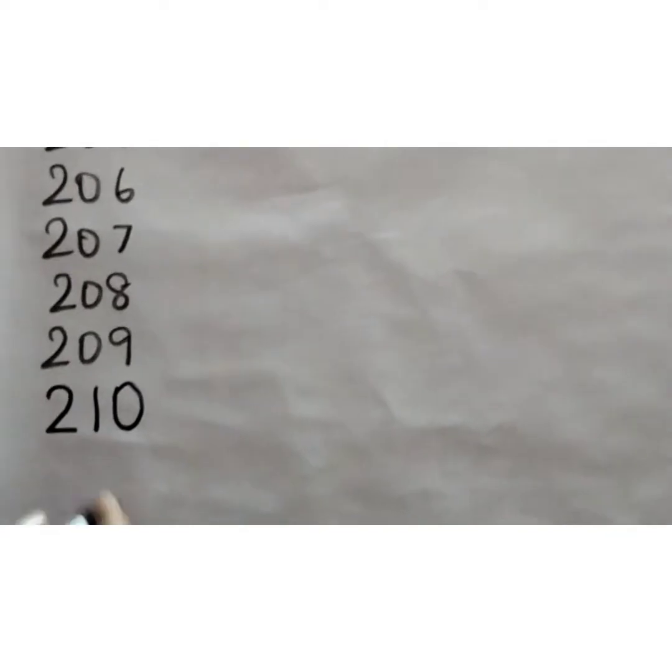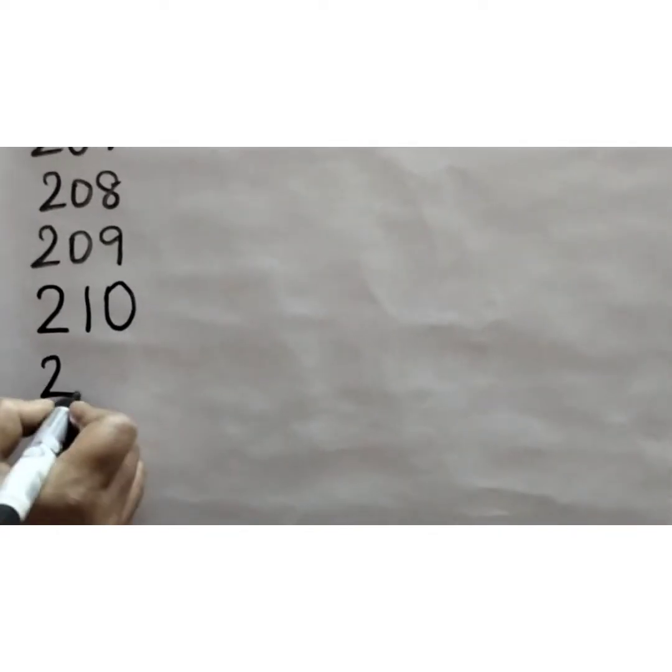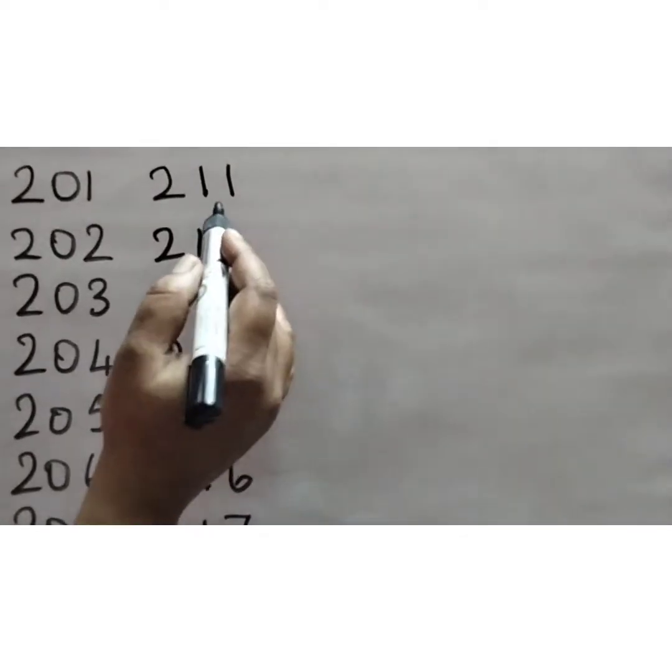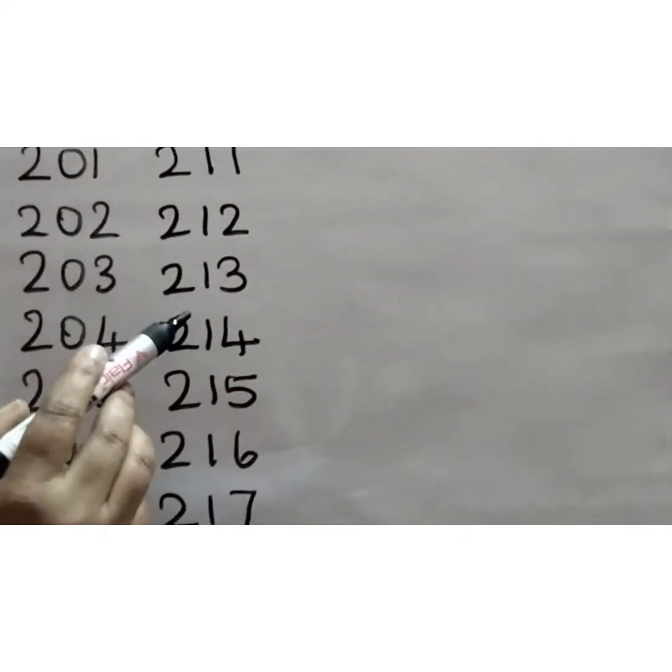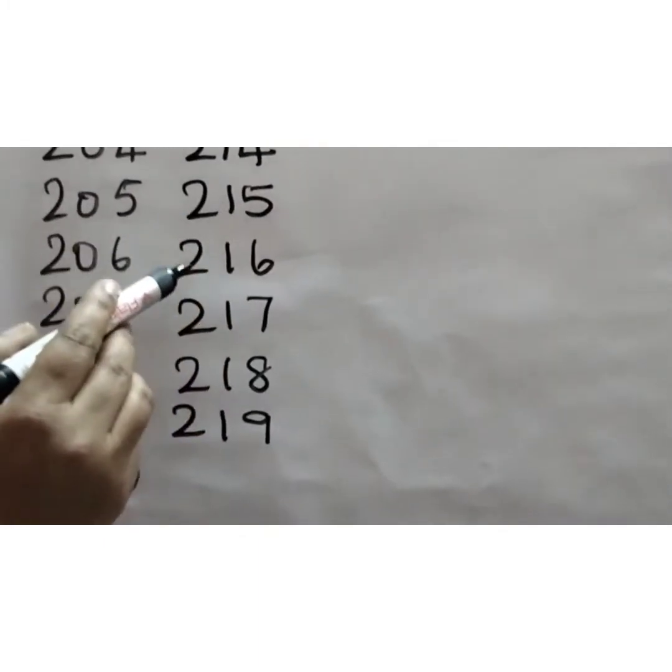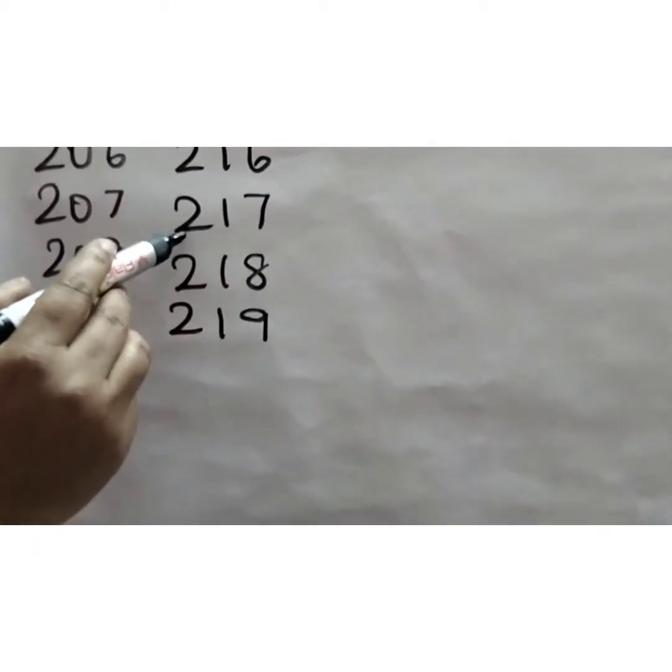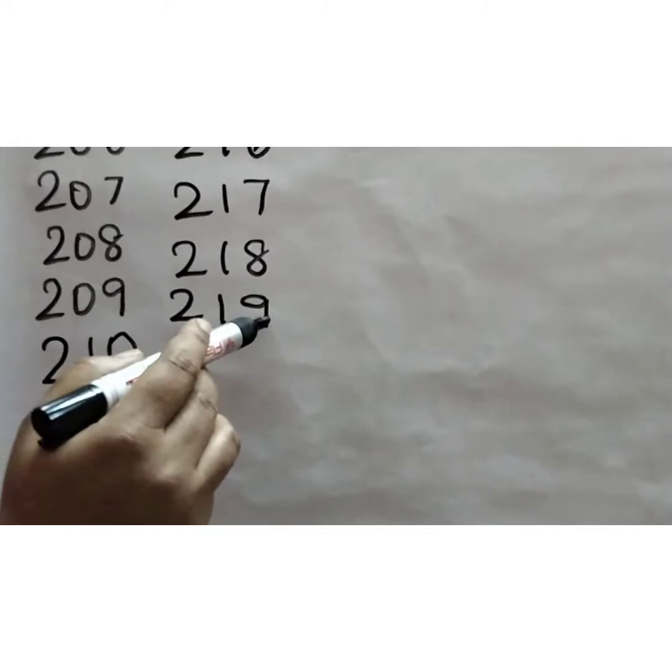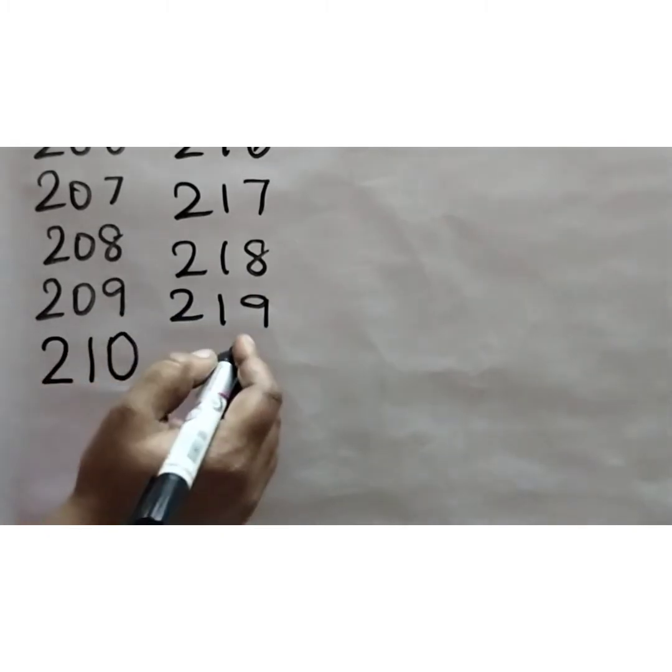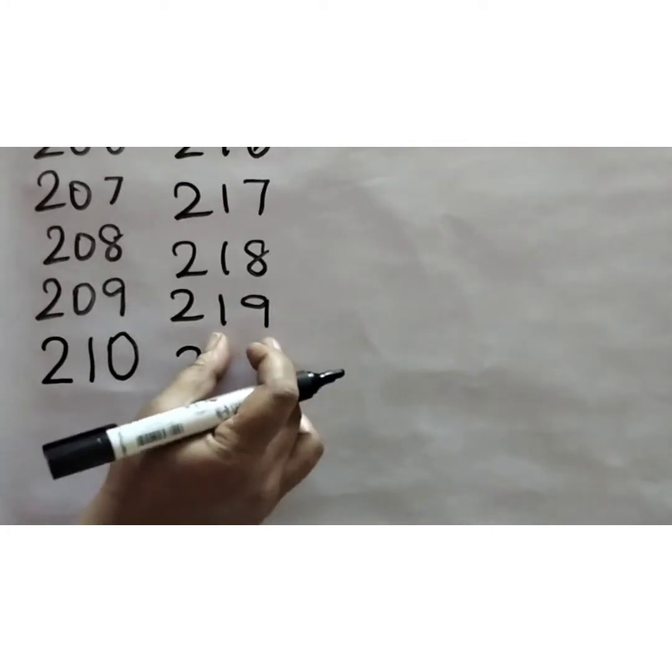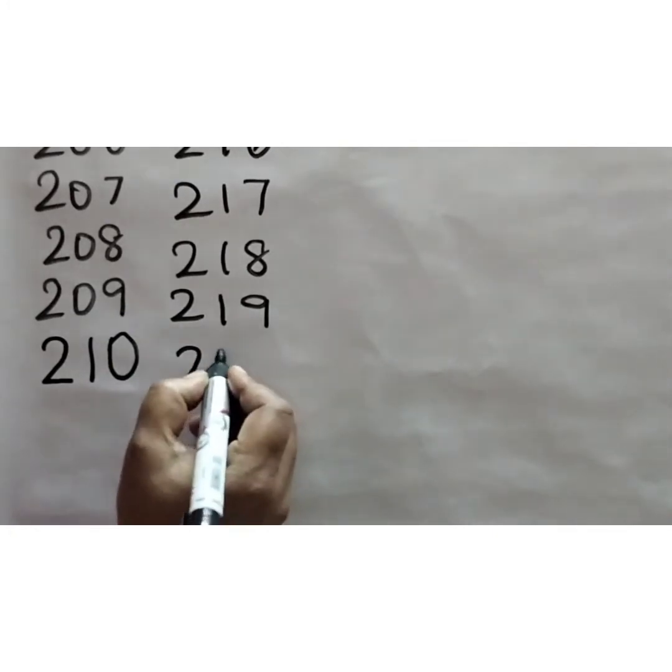Then as usual, you write, continue 211. After 210, 211, 212, 213, 214, 215, 216, 217, 218, 219. After this 219, what we have to write children? 200 and after 19, what will come? 220.